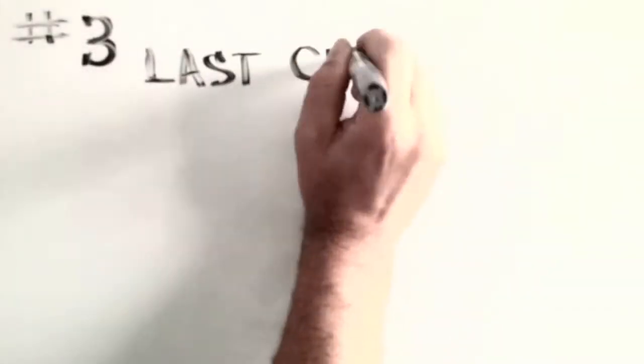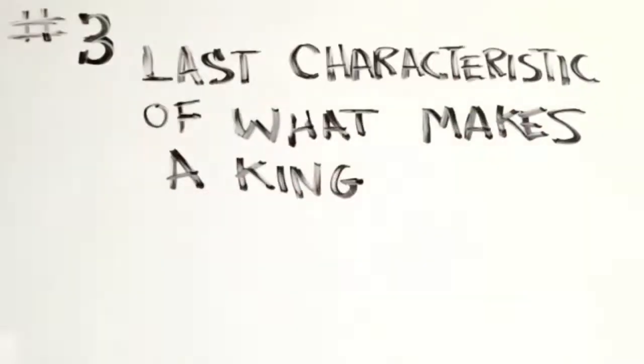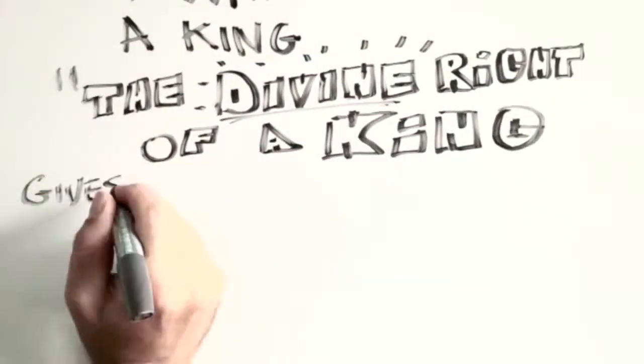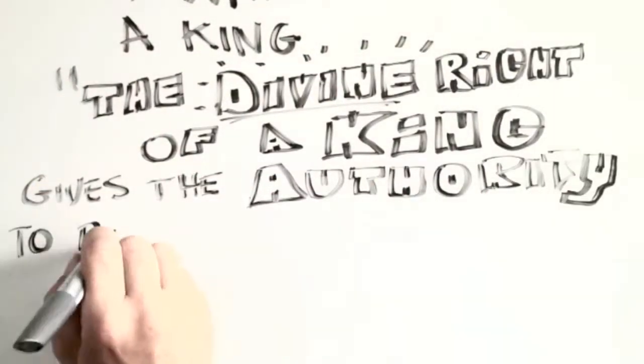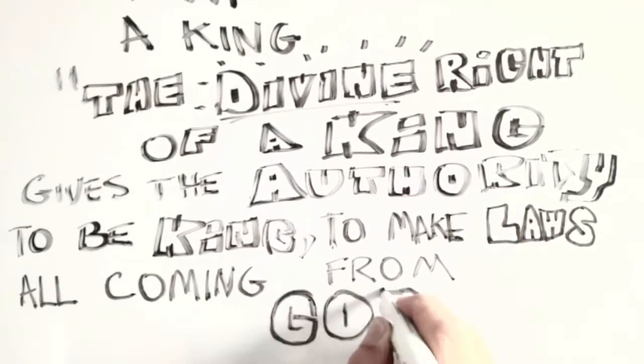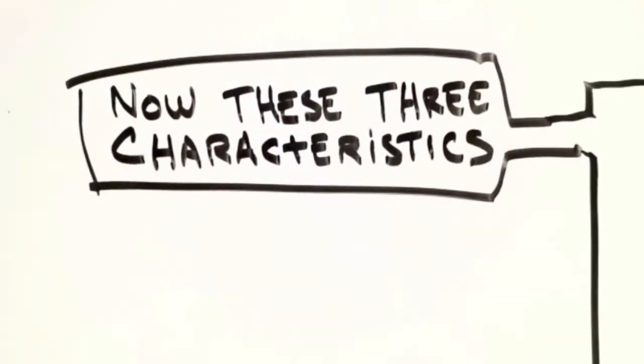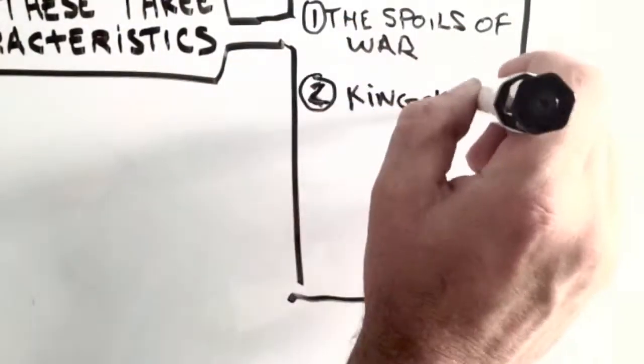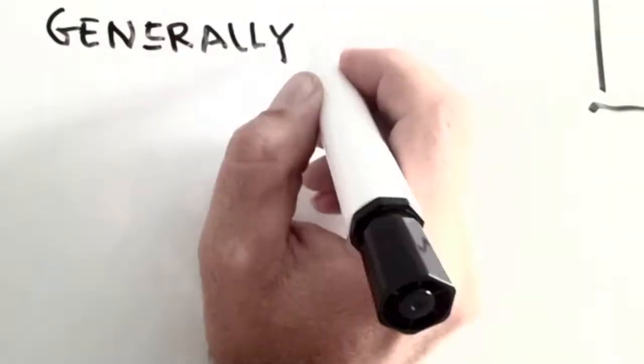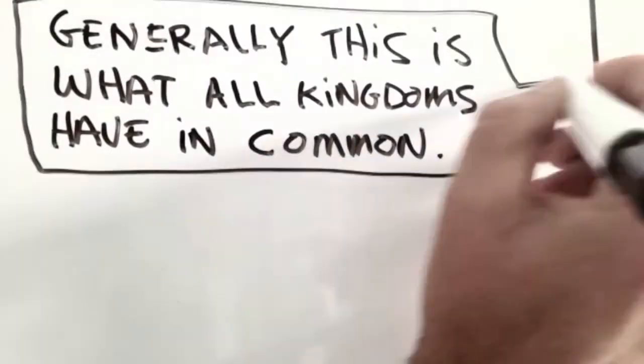Now, my last point or characteristic of what makes a king is something called the divine right of a king. This gives him his authority to be a king, to make laws and rules, is coming from God. These three characteristics are three of the basic things that almost all kingdoms have shared in common. There's a lot of debate and argument over this. But generally, this is what all kingdoms have in common.